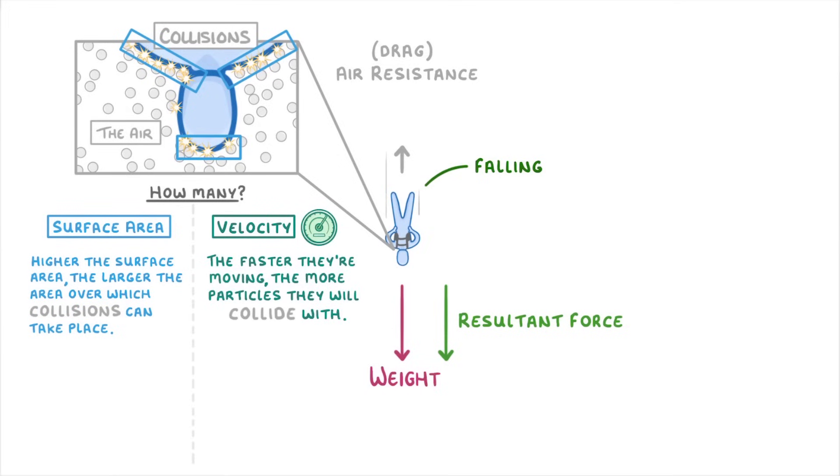At the moment, because this person's only just started falling, they won't have accelerated very much. And so their velocity will still be quite low, meaning they're not falling very fast. This means that the force of air resistance acting on them will also be low, which we can show with this small grey arrow that points upwards.